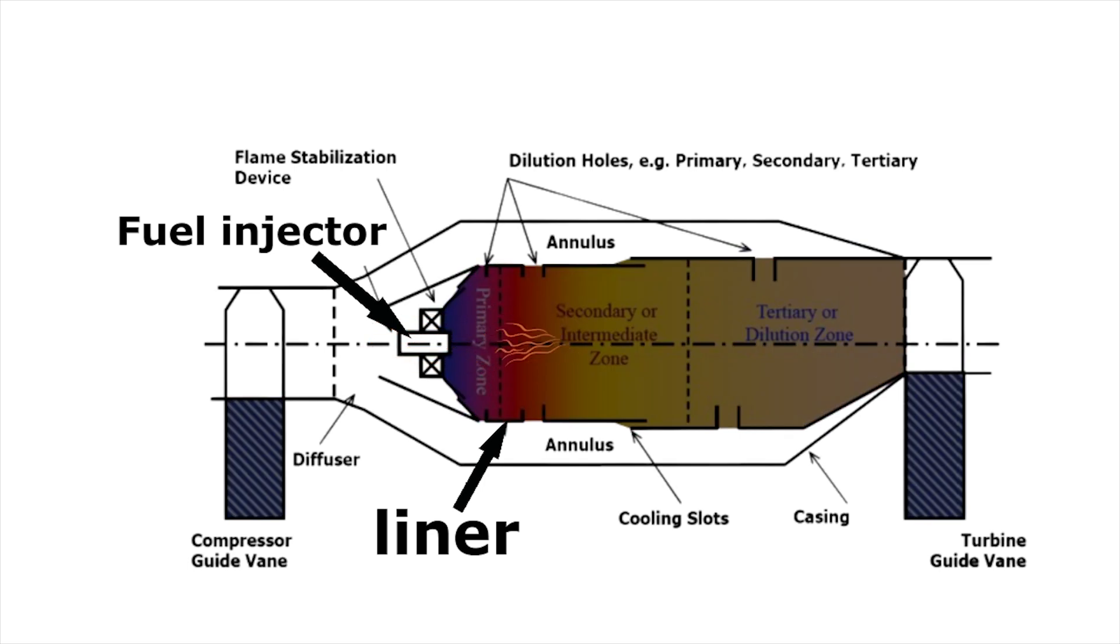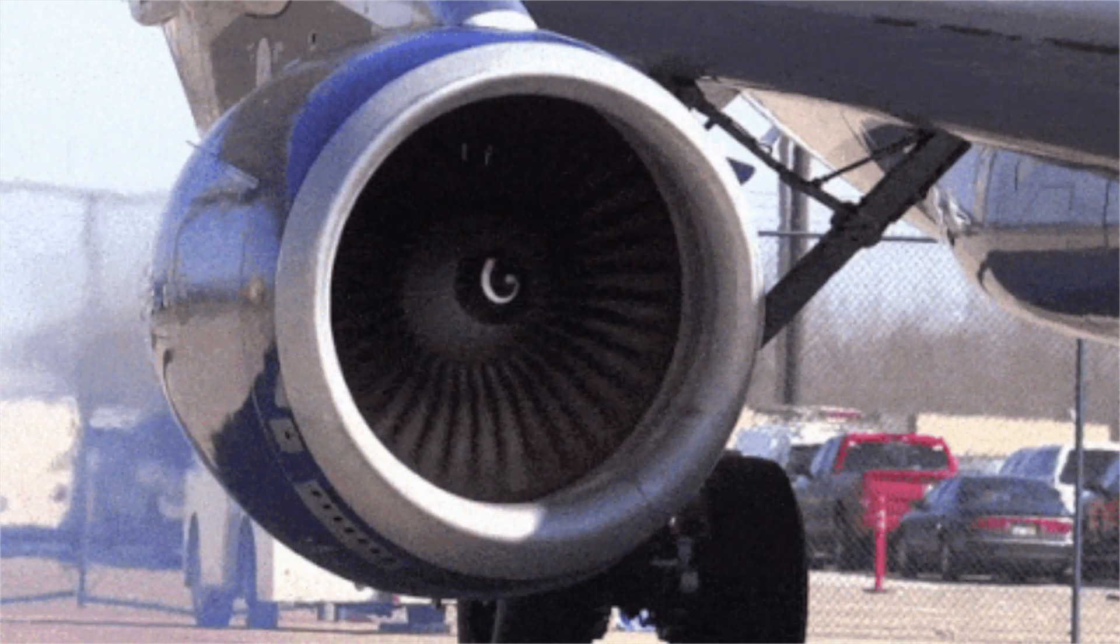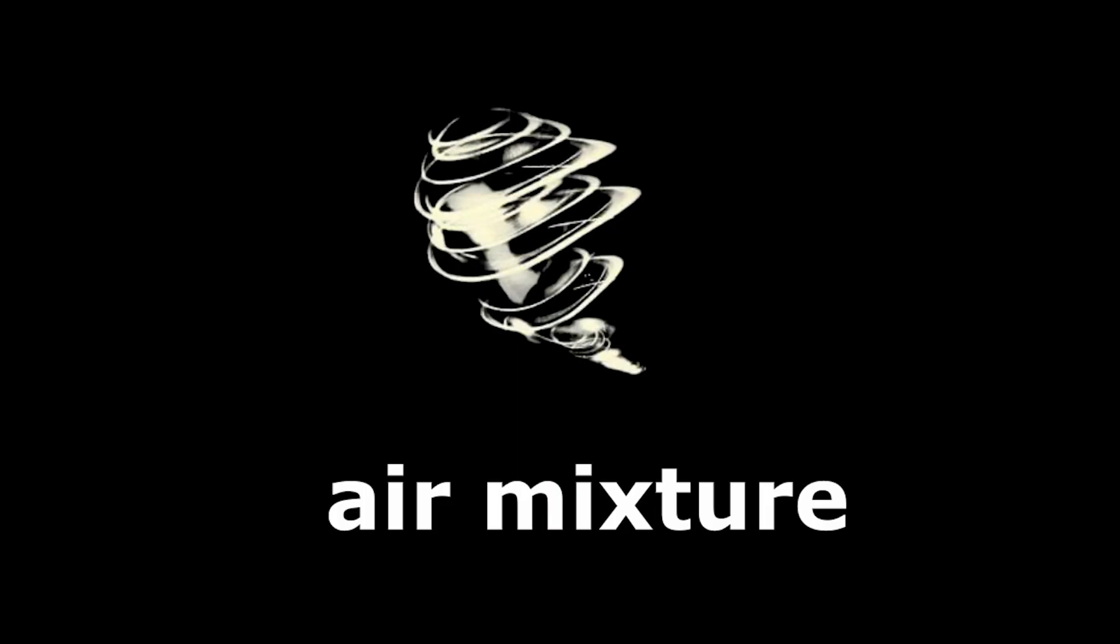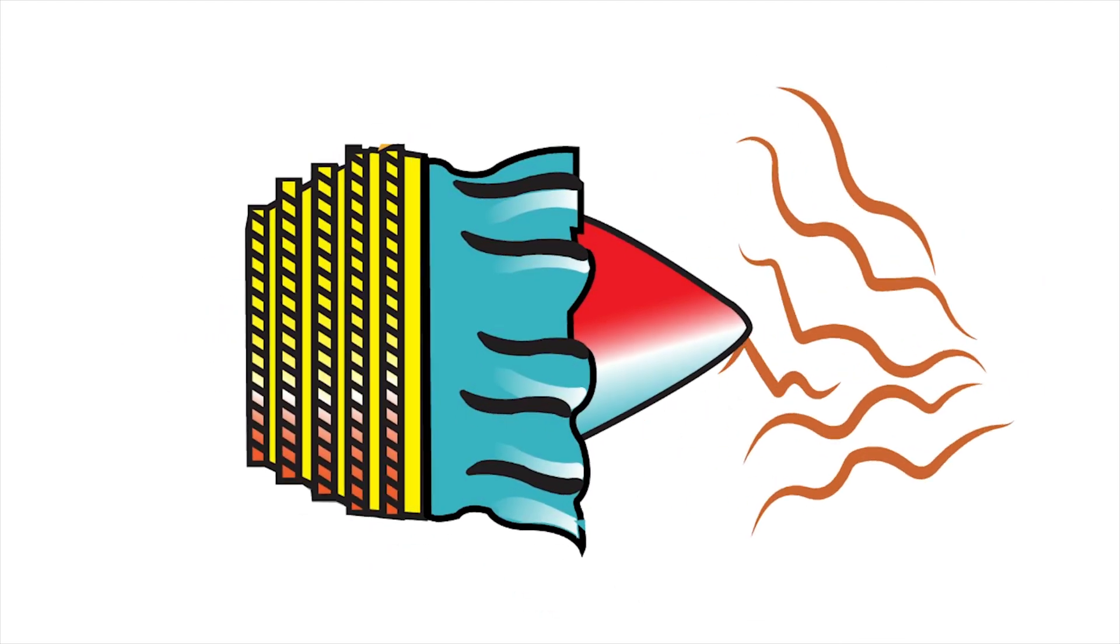The actual ignition happens in the combustor's liner where the fuel and air mixture is initially ignited with an igniter when the plane is fired up for the first time. After that, the igniter is switched off and the engine keeps running on itself. All it takes is a tiny spark for that fuel and air mixture to go bang and to create a massive explosion.